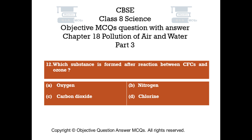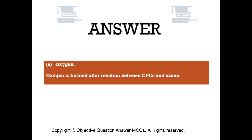Question number 12: Which substance is formed after the reaction between CFCs and ozone? Option A: oxygen, Option B: nitrogen, Option C: carbon dioxide, Option D: chlorine. The right answer is Option A: oxygen. Oxygen is formed after the reaction between CFCs and ozone.